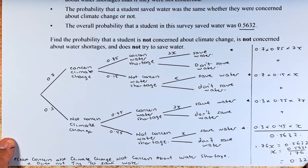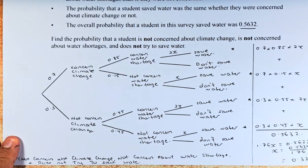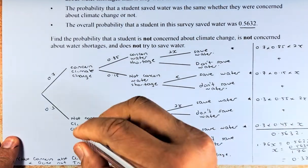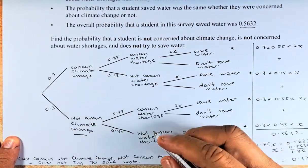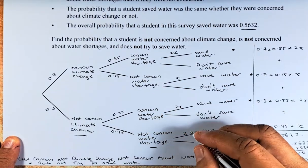Once we have done that, we need to answer this part of the question. Find the probability that the student is not concerned about climate change, not concerned about water shortage, and does not try to save water. If x is 0.32, the question here will be 0.68 because they must add up to 1.